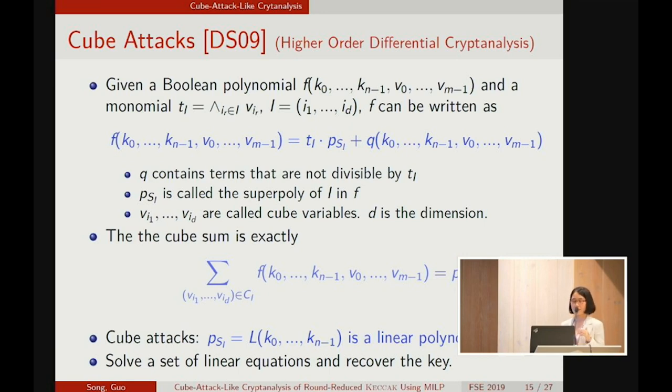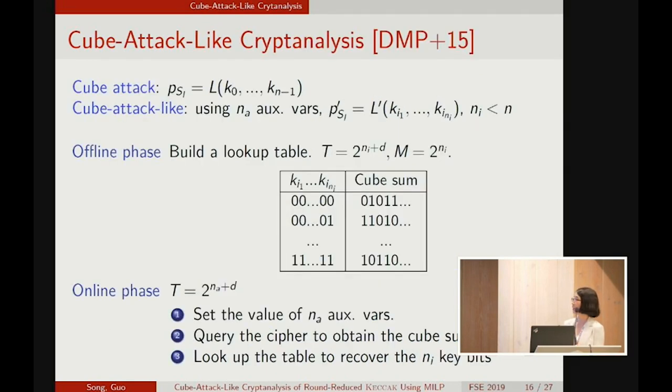When all the cube variables take all possible values, the sum of the polynomial will be exactly the superpoly. In cube attacks, the attacker exploits linear superpoly to recover the key. In the original cube attack, the psi, the superpoly, is regarded as a linear expression in all the key bits. While in the cube-like cryptanalysis, the attacker uses nA auxiliary variables.